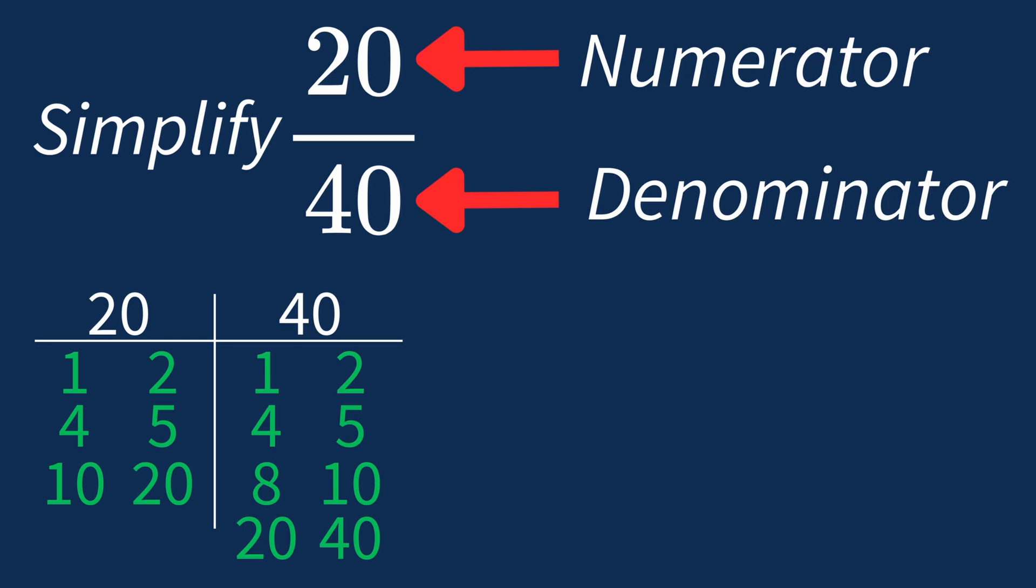So the largest common factor between 20 and 40 is 20. This means we can divide both the numerator and denominator by 20 to simplify the fraction.